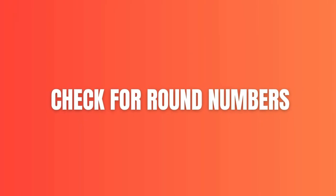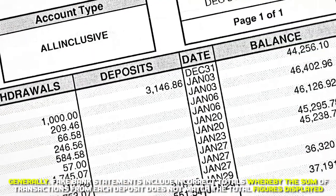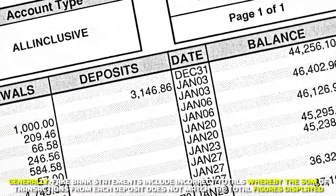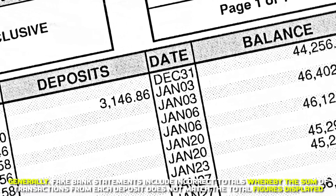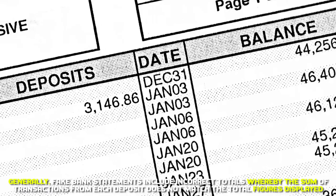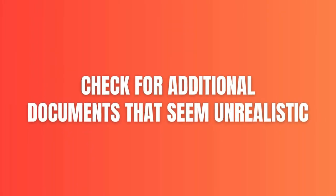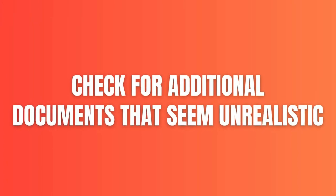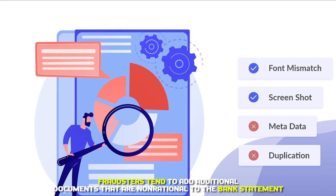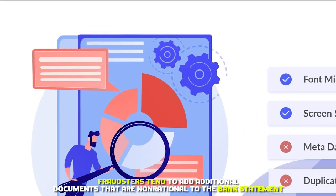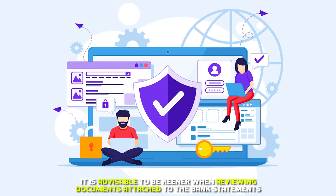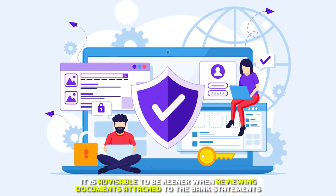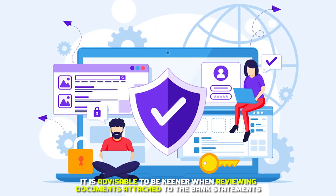Check for incorrect totals. Generally, fake bank statements include incorrect totals, whereby the sum of transactions from each deposit doesn't match the total figures displayed. Check for additional documents that may seem unrealistic. Fraudsters tend to add additional documents that are non-rational to the bank statement. It is advisable to be keener when reviewing documents attached to the bank statements.